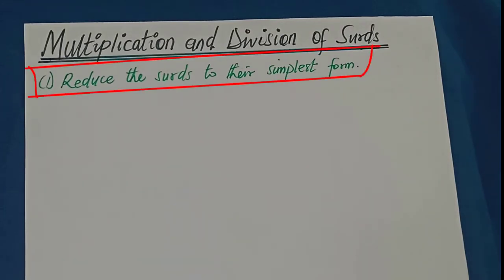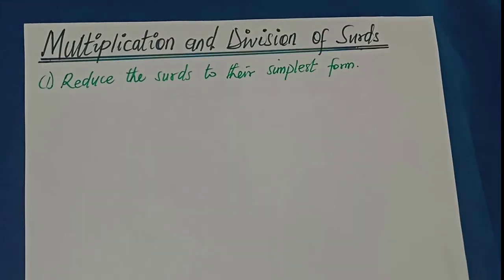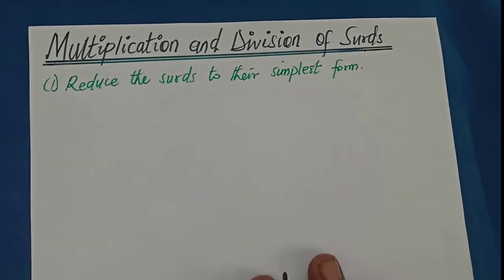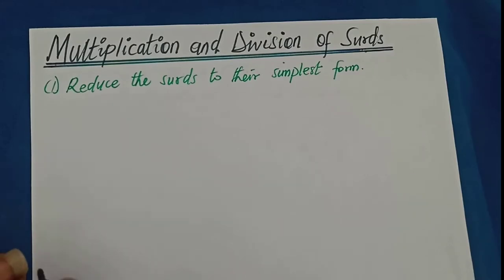Firstly, you have to reduce the sets to the simplest form before we go ahead and multiply, otherwise the sets or their values may be so big that we may fumble.